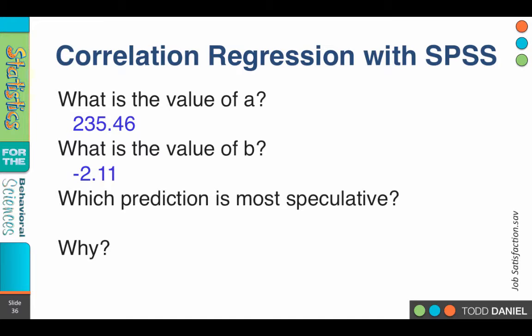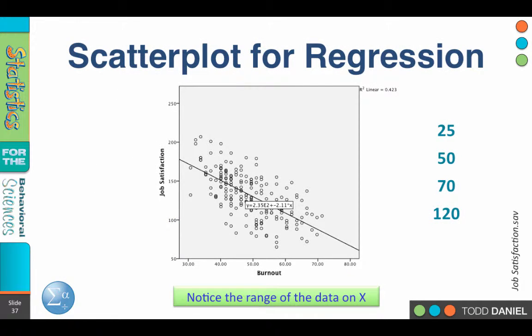Now, when we did our predictions, one of them was pretty speculative. Which one was most speculative? Well, let me explain this. Let's go back to our output regarding the scatter plot with our regression line. What I'd like you to pay attention to are the values on the x-axis. What's the lowest value? Somewhere around 30. What's the highest value? The x-axis here runs up to 80. The highest actual data point? 71, maybe? So the data themselves run from approximately 30 to 70.